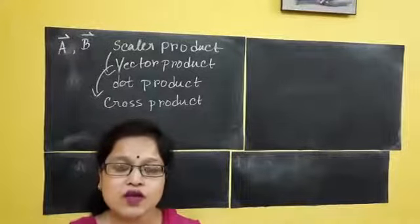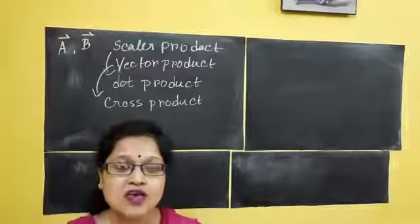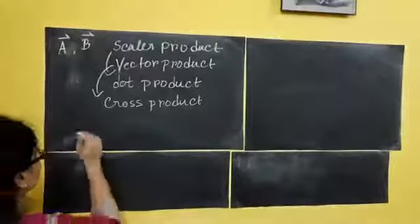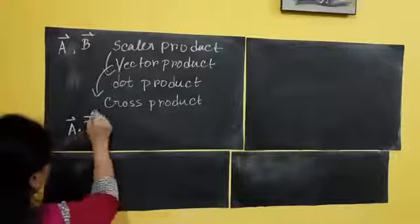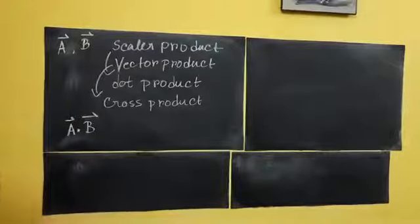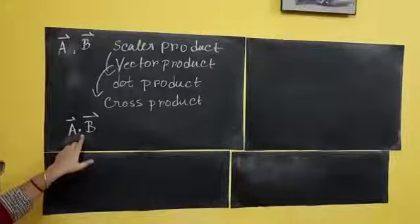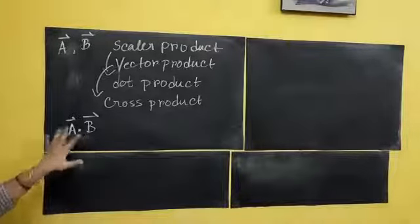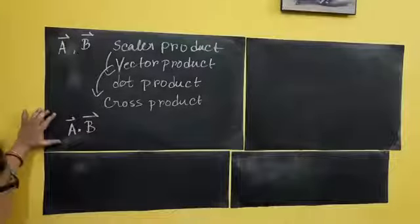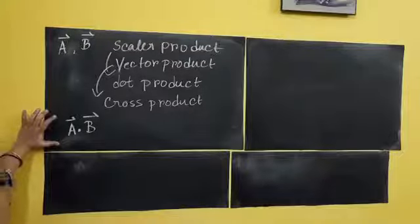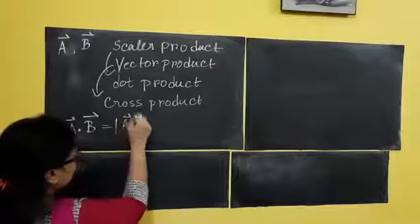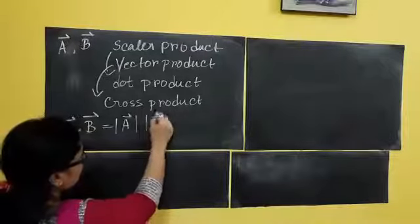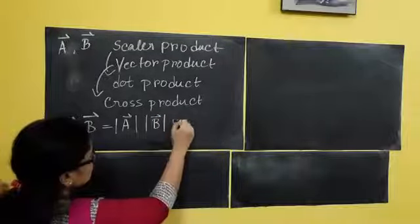If I ask you to do multiplication between vector A and B in terms of scalar multiplication, you will write it as A dot B. According to the formula of scalar product, A dot B is equal to magnitude of vector A, magnitude of vector B, cos theta.